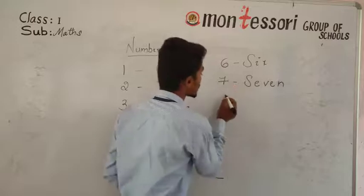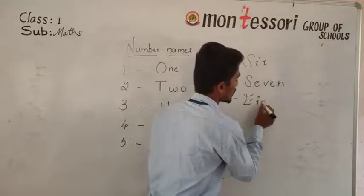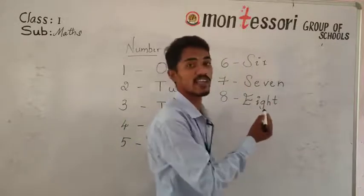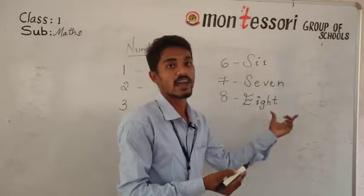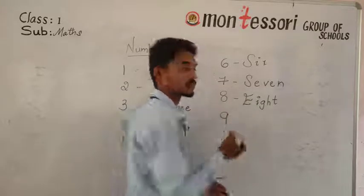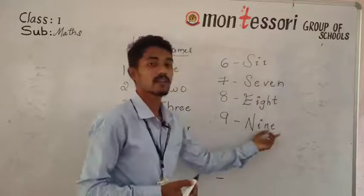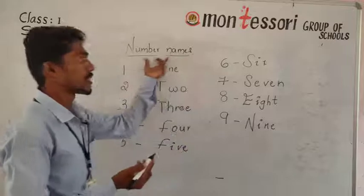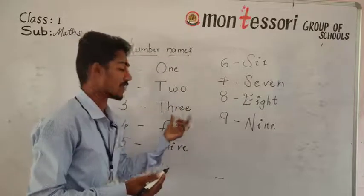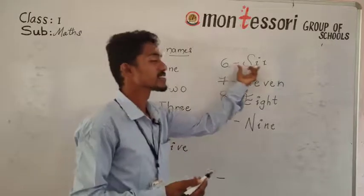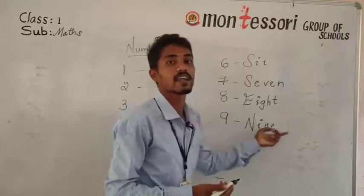After seven comes eight. The spelling of eight is E-I-G-H-T. Number name of eight is E-I-G-H-T. And the last number in our topic is nine. The spelling of nine is N-I-N-E. So: one O-N-E, two T-W-O, three T-H-R-E-E, four F-O-U-R, five F-I-V-E, six S-I-X, seven S-E-V-E-N, eight E-I-G-H-T, nine N-I-N-E.